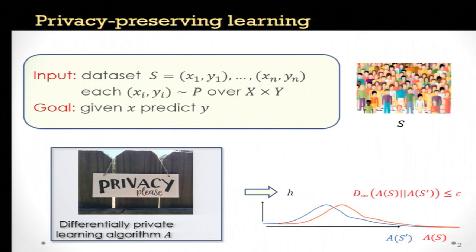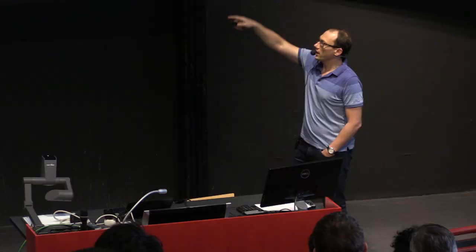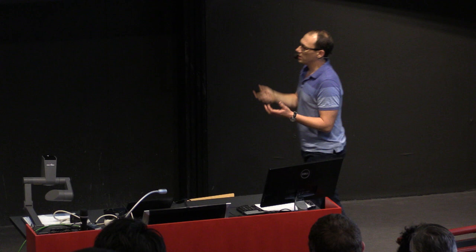Differential privacy is basically a notion of stability for randomized algorithms, which requires that the output distributions of that algorithm on any pair of data sets that differ in a single element are close. Specifically, the closeness is measured as an upper bound on the ratio of densities, and one says that the algorithm satisfies epsilon differential privacy if this ratio is upper bounded always by e to the epsilon.